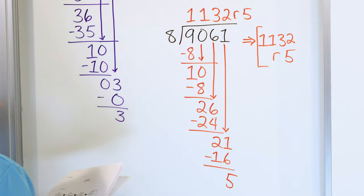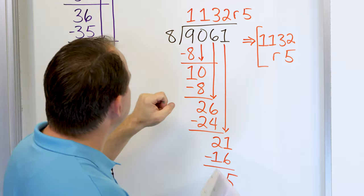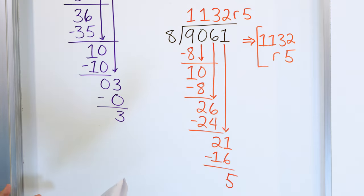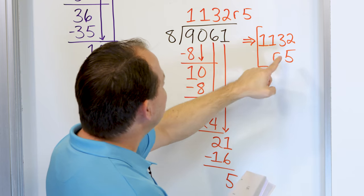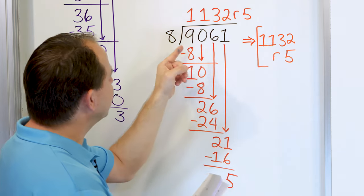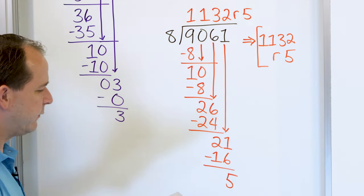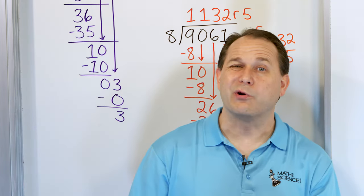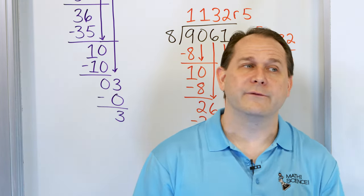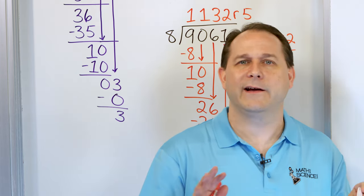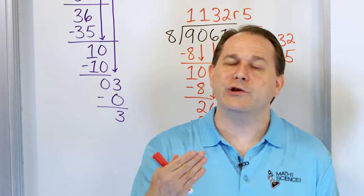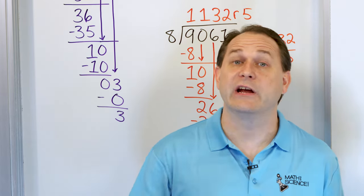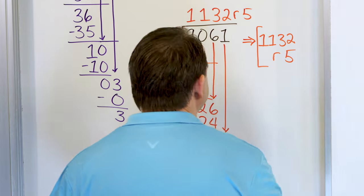If we had 9,061 potatoes and put them into 8 different baskets, every basket would have 1,132 potatoes, but I would have 5 left over that I couldn't distribute evenly — so we call it a remainder. It took a long time to do just two problems, and we have quite a few more. If you need to pause and take a break, that's fine. The way you get good at it is by seeing and doing it a lot.